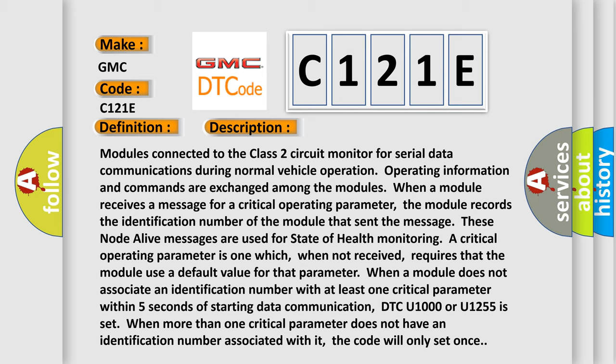Modules connected to the Class 2 circuit monitor for serial data communications during normal vehicle operation. Operating information and commands are exchanged among the modules. When a module receives a message for a critical operating parameter, the module records the identification number of the module that sent the message. These node alive messages are used for state of health monitoring. A critical operating parameter is one which, when not received, requires that the module use a default value for that parameter.